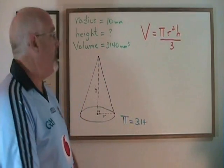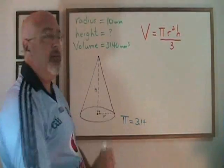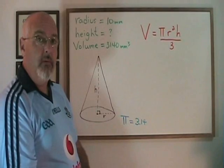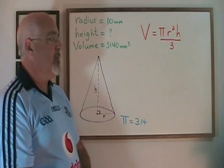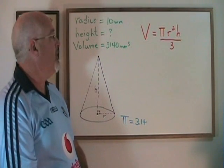In this next example, our radius is 10 millimeters. Our height is the unknown, and the volume is 3,140 millimeters cubed.